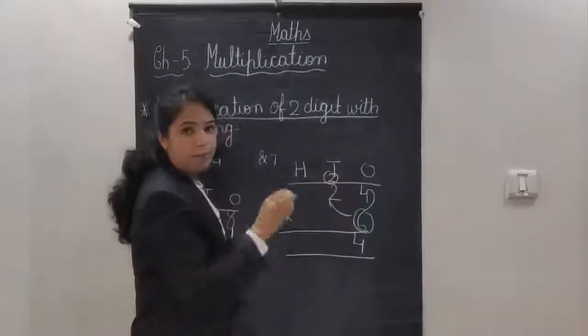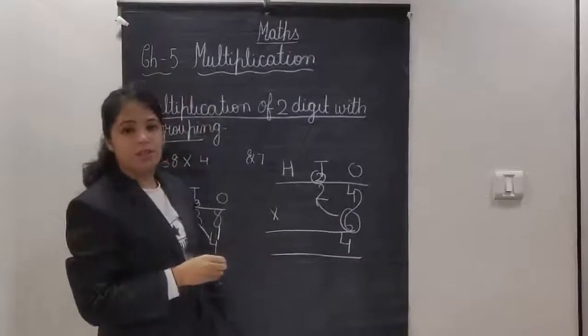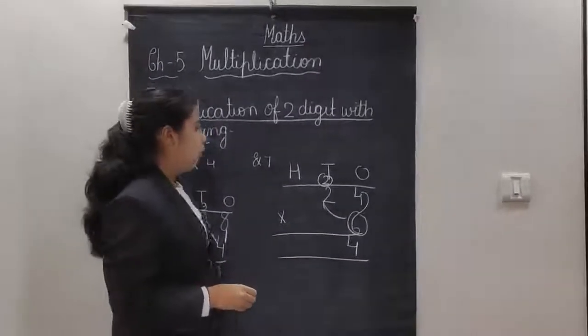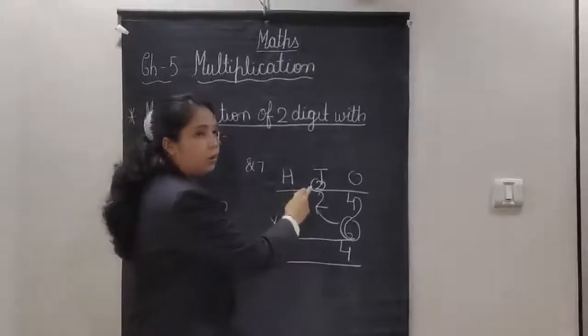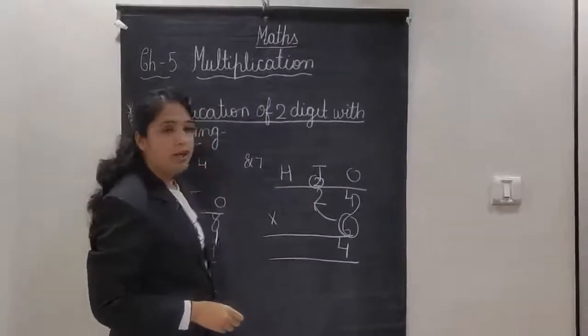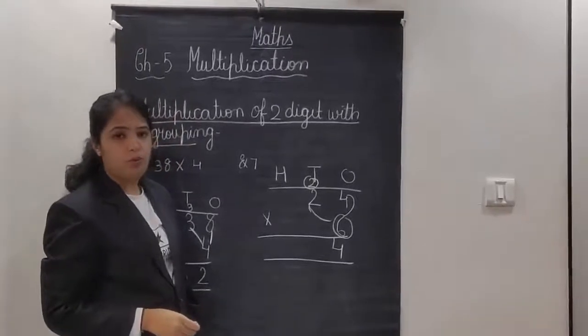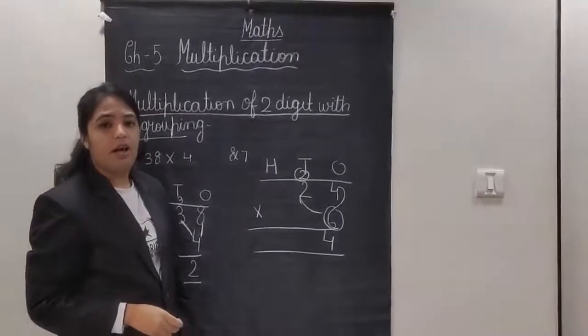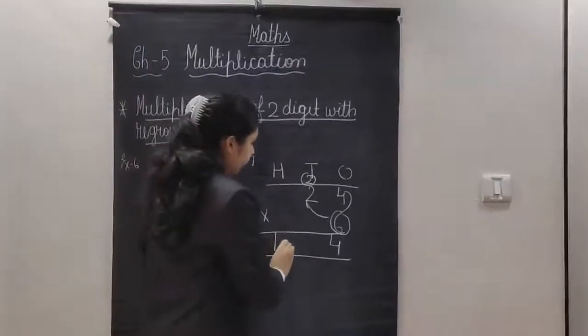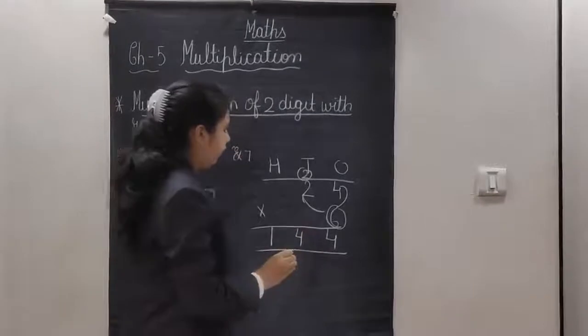6 fours are 24, forward half, backward half. Now 6 twos are, 6 ones are 6, 6 twos are 12. So answer is 12. Don't forget to add this carryover. 12 plus 2, 12 in my mind, 2 on my fingers. After 12, 13 and 14. So here my answer is 144.